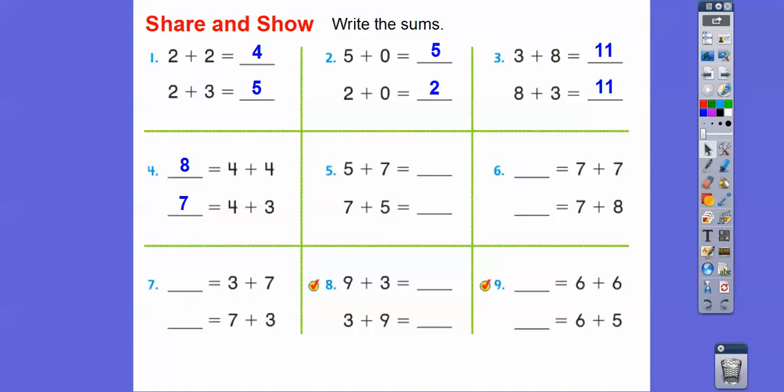So think of 5 + 5 is 10. So 5 + 7 is going to be two more than, because 7 is two more than 5 + 5. So two more than 10 is going to get us 12 on both of those. 7 + 7 is 14. 7 + 8, this is one more than 7 + 7, so that's 15.